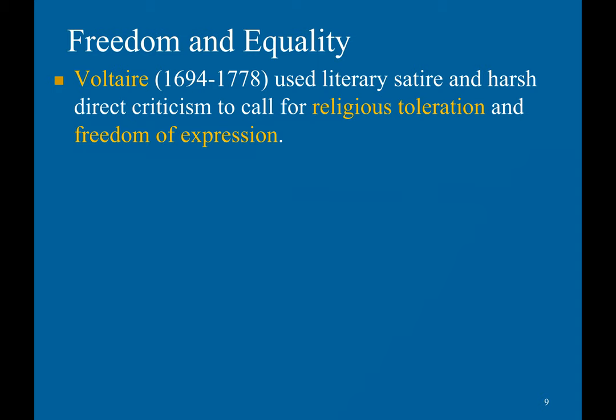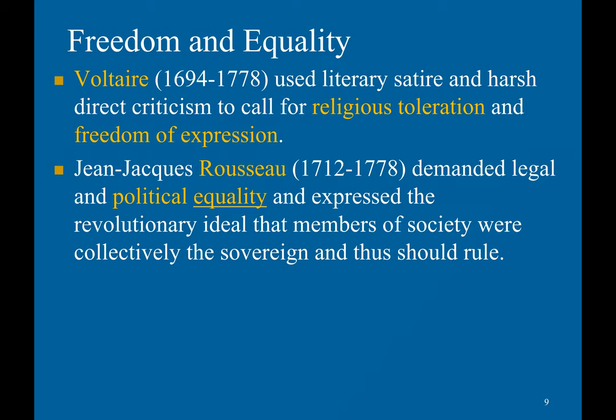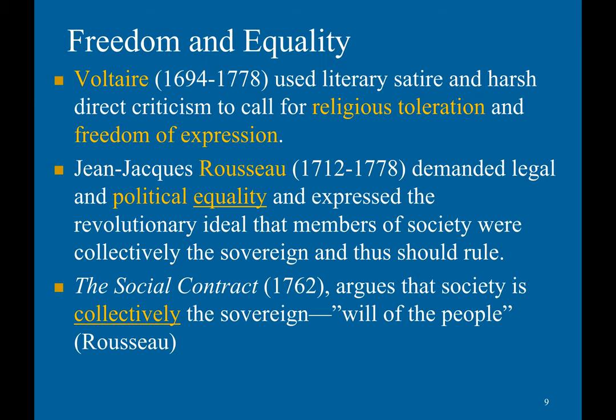Locke was basically justifying the Glorious Revolution and the notion of parliamentary supremacy. Voltaire used literary satire and harsh direct criticism to call for religious toleration and freedom of expression. Jean-Jacques Rousseau demanded legal and political equality and expressed the revolutionary ideal that members of society were collectively the sovereign and thus should rule. His work, The Social Contract — not to be confused with Locke's idea — argued that society is collectively the sovereign, relying on the will of the people.